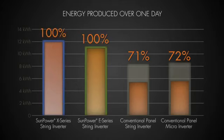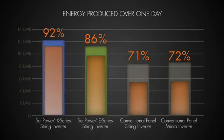Because of their unique design, the SunPower panels performed much better, with the E20 panel producing 86% and the X21 producing 92% when compared to their unshaded energy production.